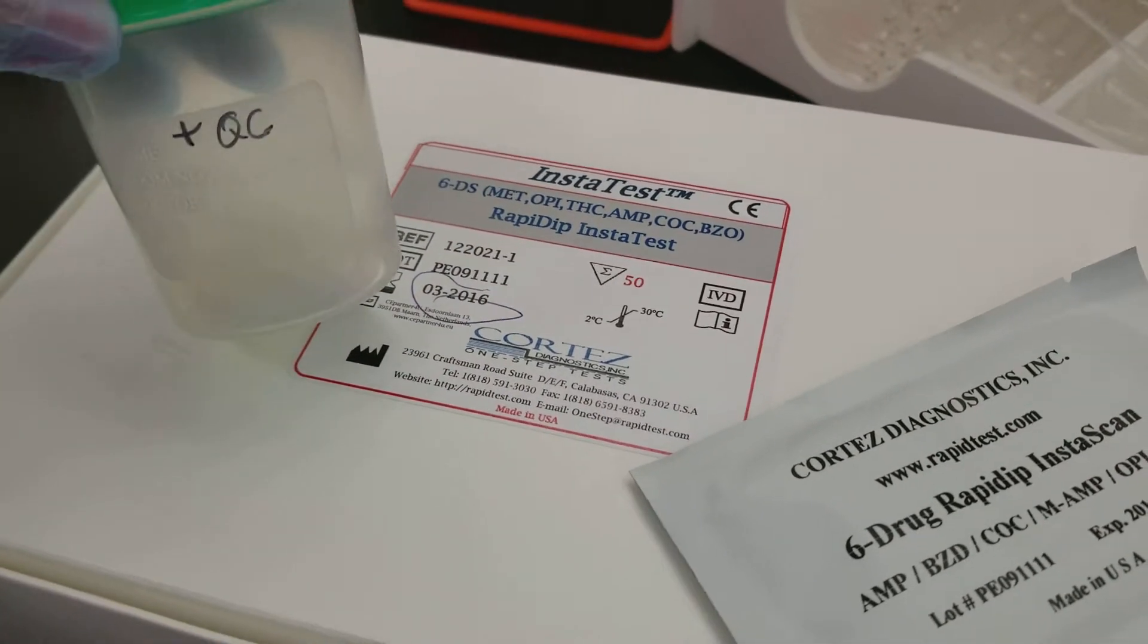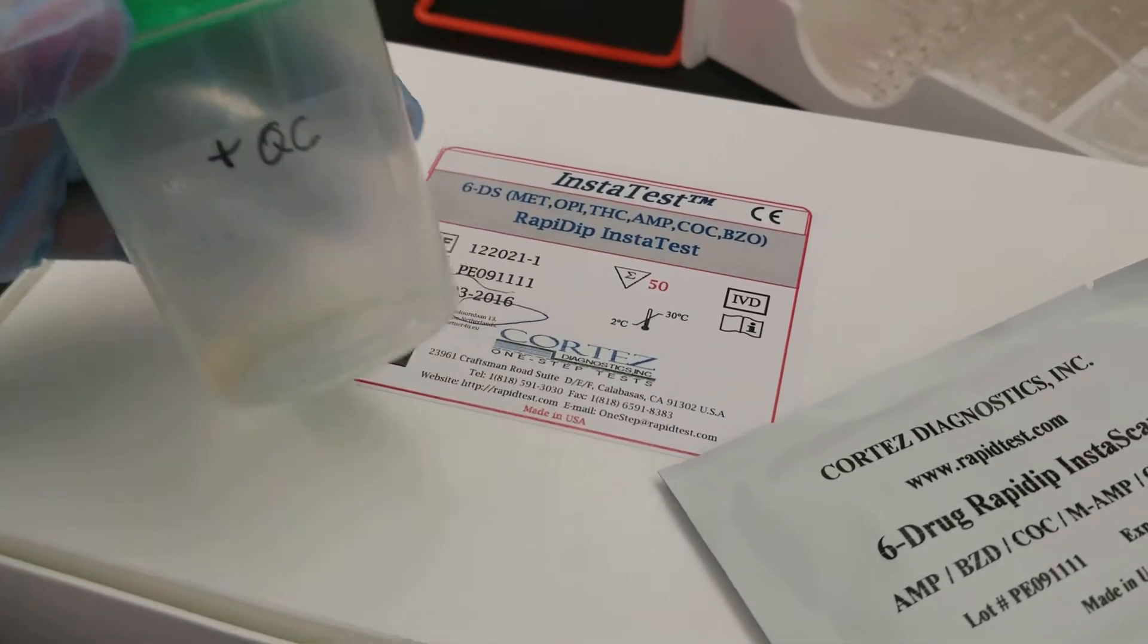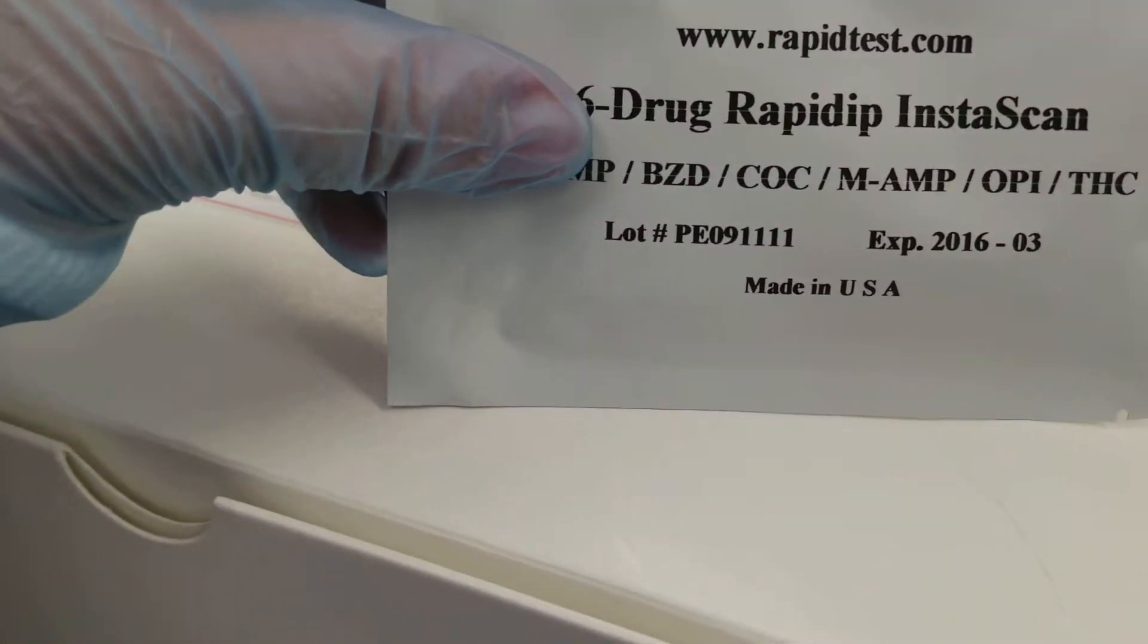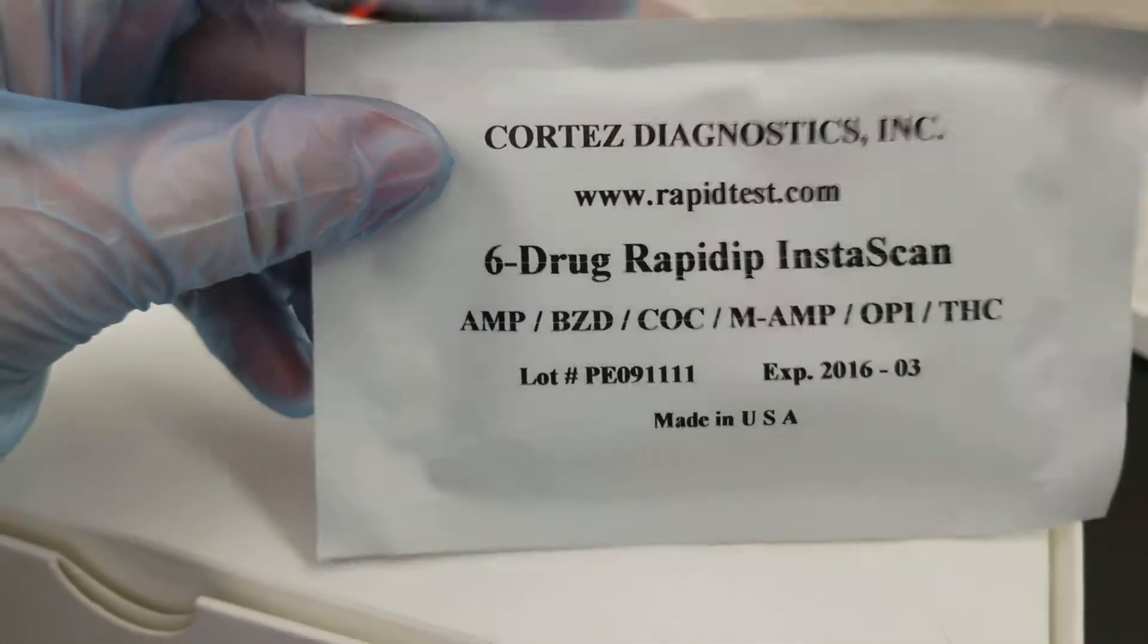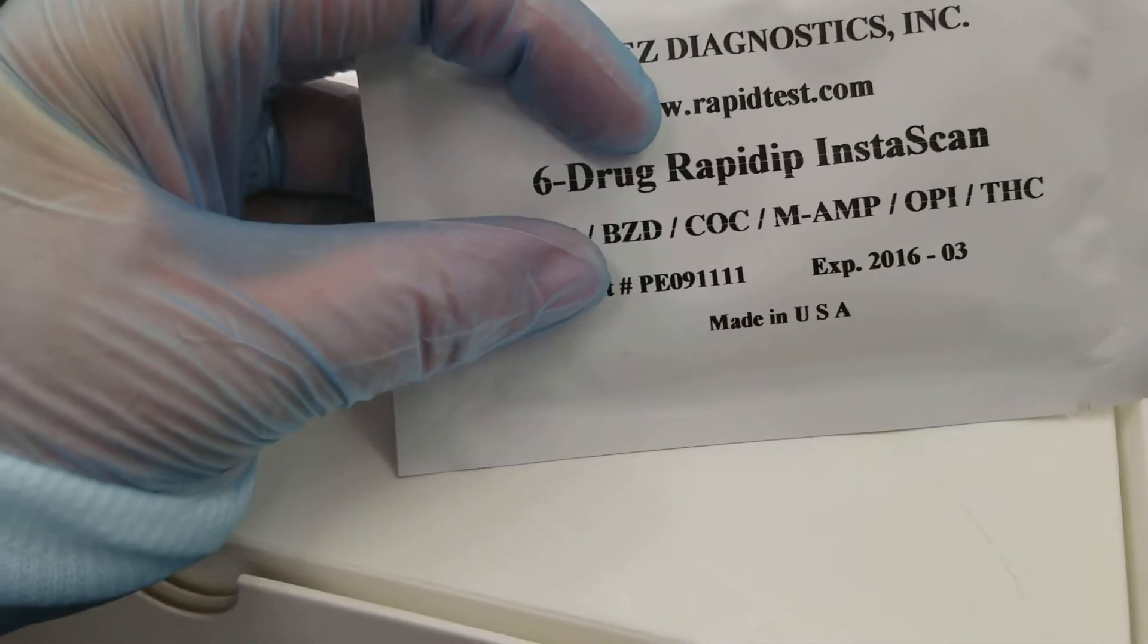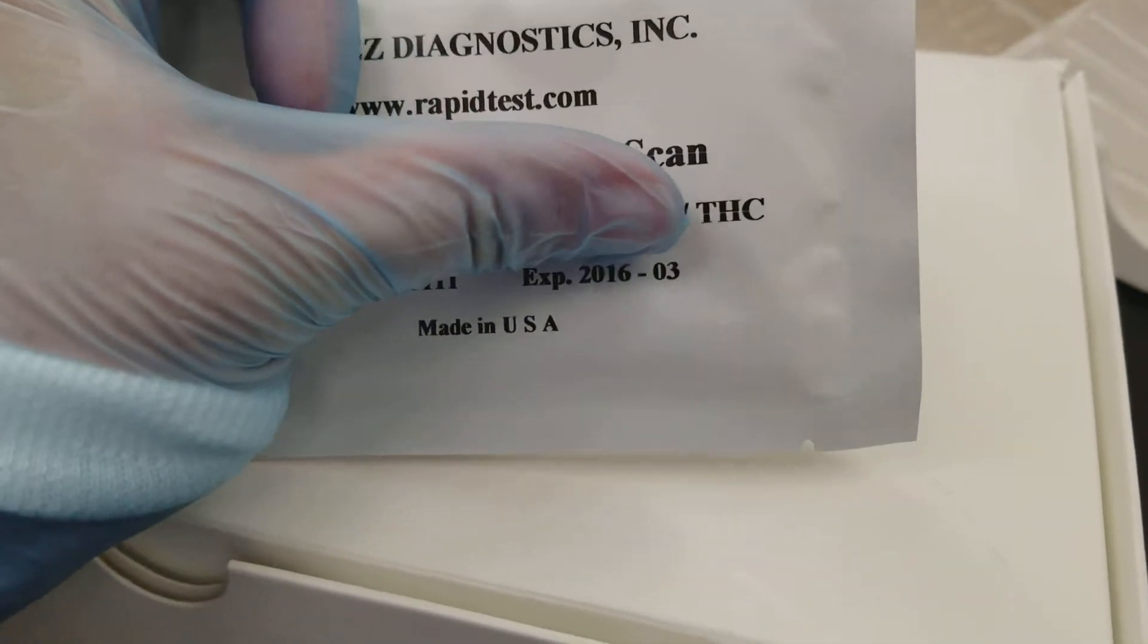So I'm going to be using the positive QC because I want you to see what it looks like. It's a rapid card that tests a patient's urine for amphetamines, benzodiazepine, cocaine, amphetamines, opiates, and THC, which is a metabolite of marijuana.